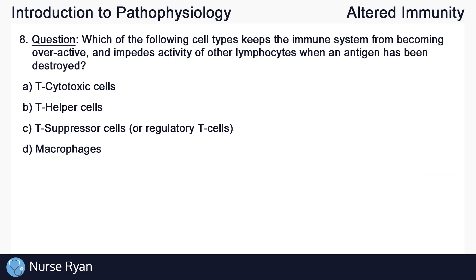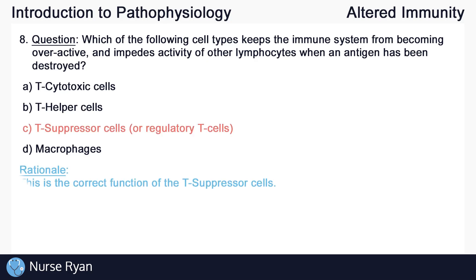And for the last question of this quiz, number eight: which of the following cell types keeps the immune system from becoming overactive and impedes the activity of other lymphocytes when an antigen has been destroyed? The answer is C, T suppressor cells, or regulatory T cells. This is the correct function of the T suppressor cells. And that's it for our altered immunity quiz.